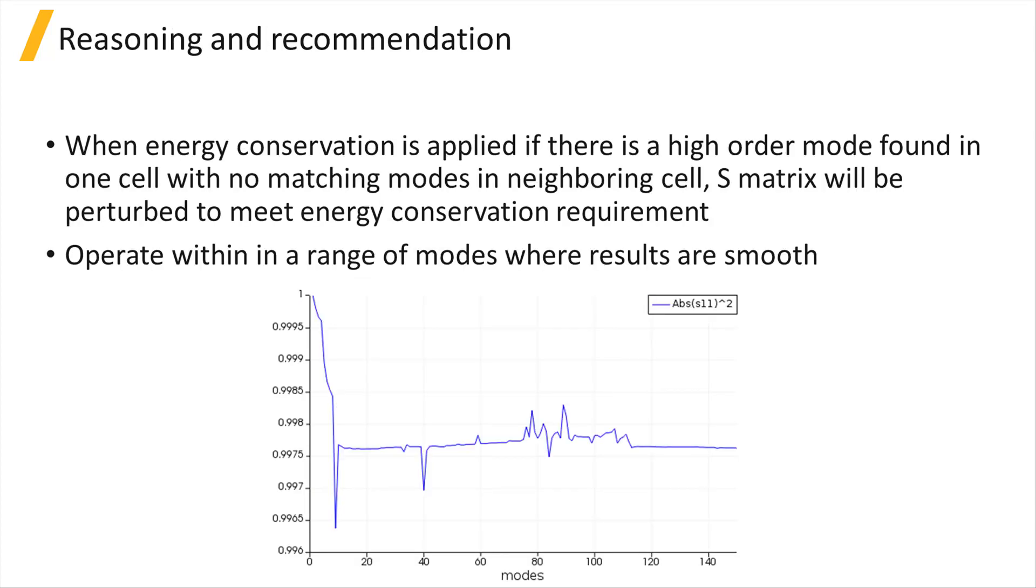What can happen is that, as you include more modes, at some point a high order mode is found in one cell which has very little overlap with any modes in neighboring cells. This can lead to large perturbations of the S-matrix of the cell interface which also affects the internal and user S-matrix results when energy conservation is applied.